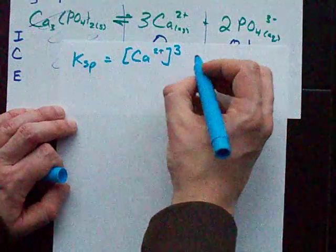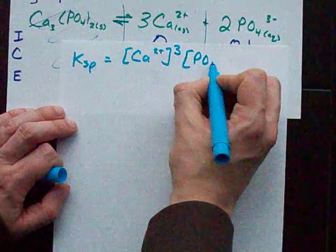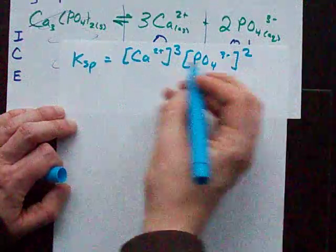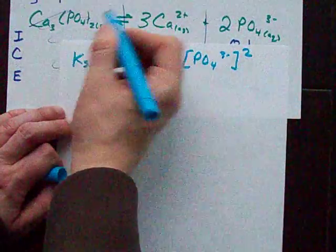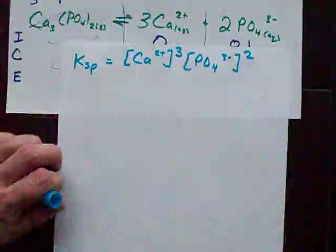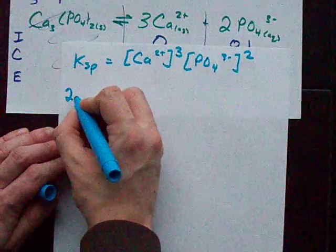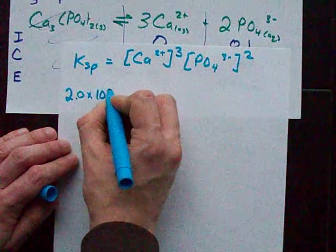Calcium cubed, PO4 squared, and we don't include calcium phosphate because it's a solid.